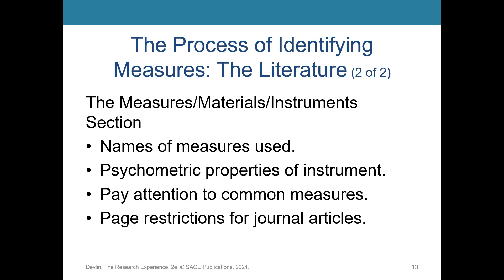What you'll see in the literature is the name of the instrument used — always cite that. They'll give you the psychometric properties of the instrument, like a Cronbach's alpha number or results from a factor analysis. See what instruments come up frequently, as those common instruments tend to be better. Often, though, the full instrument isn't included due to page restrictions in journal articles, so you may need to email the original authors and ask to use their instrument. Always ask for permission — that's good etiquette.